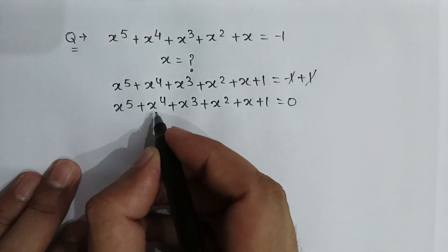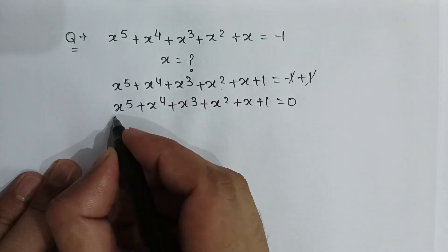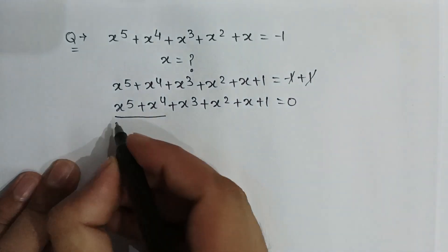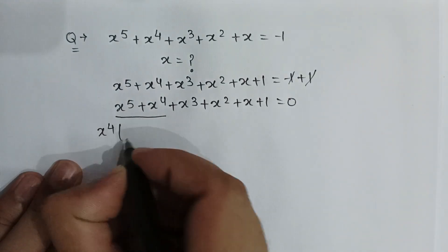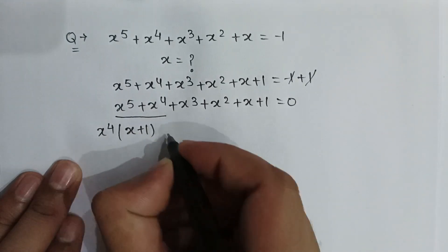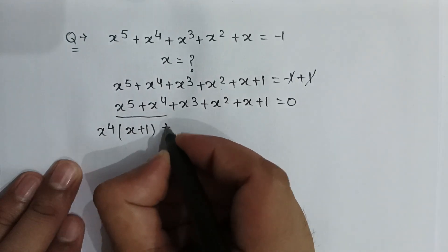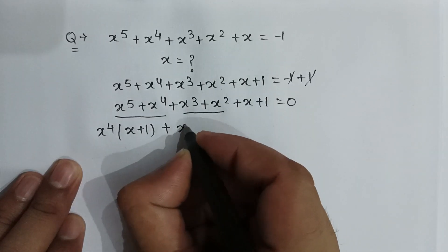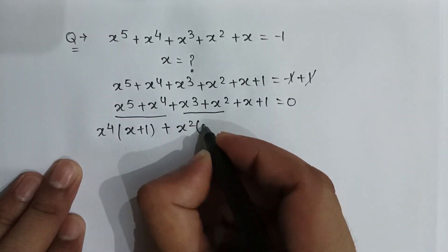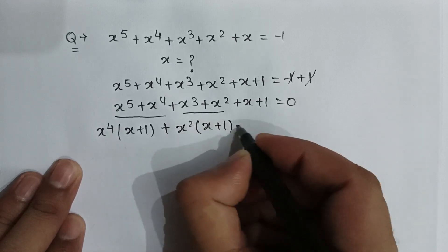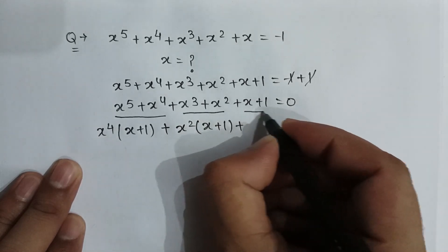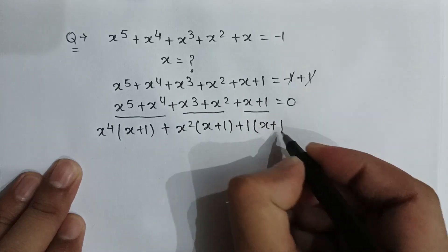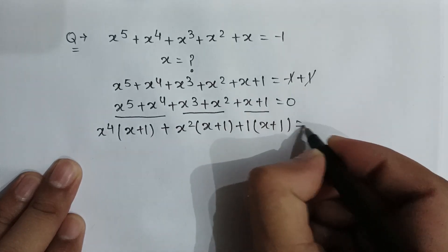If we take x to the power 4 common from the first two terms, it will be x to the power 4 times (x plus 1). If we take x squared common from the next two terms, it will be x squared times (x plus 1). If we take 1 common from the last two terms, it will be (x plus 1).